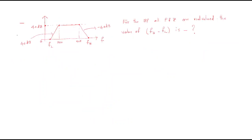The next problem: a frequency versus magnitude (Bode) plot is given, where all poles and zeros are real-valued. We need to find the value of fH minus fL, where fL is the lower frequency and fH is the higher frequency. To find this, we should follow the slope method.